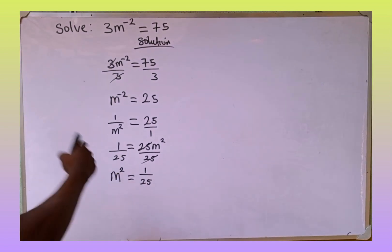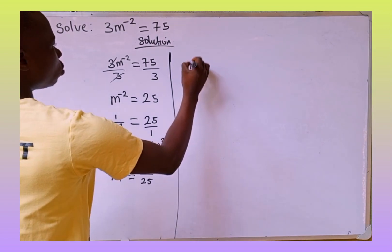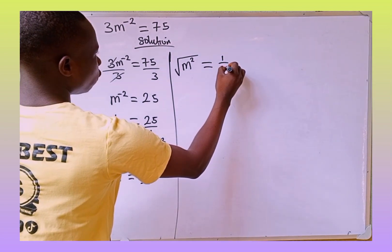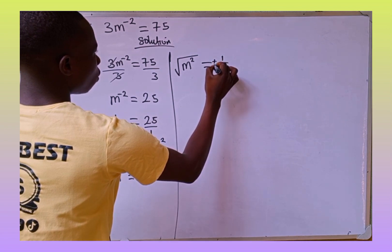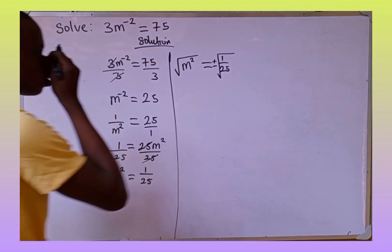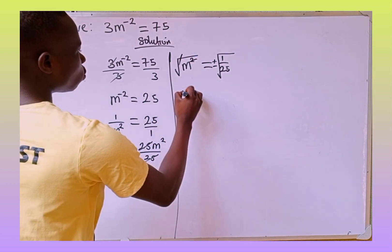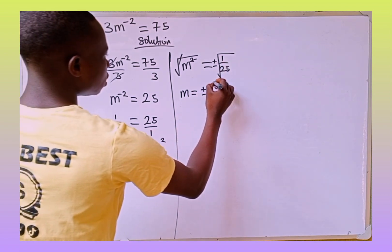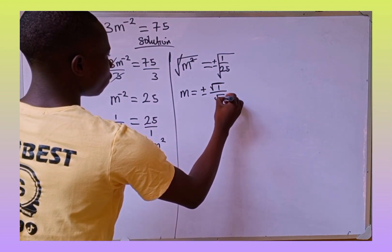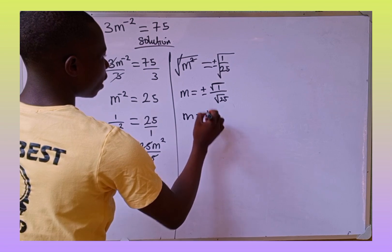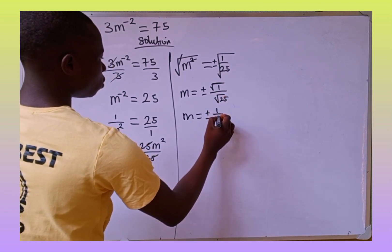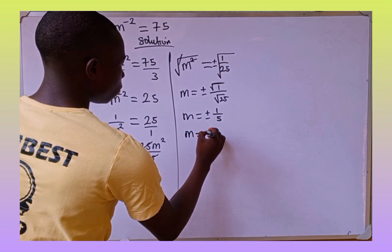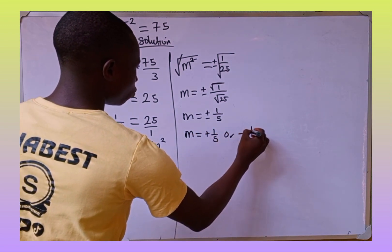Now to eliminate this square we are going to take the square root of both sides. If you take the square root of both sides we are going to have the square root of m to the power of 2, which is equal to plus or minus the square root of 1 over 25. This square root of 1 over 25 can also be written as square root of 1 divided by square root of 25. So m will be equal to plus or minus 1 over 5. The value of m that satisfies this equation is plus 1 over 5 or minus 1 over 5.